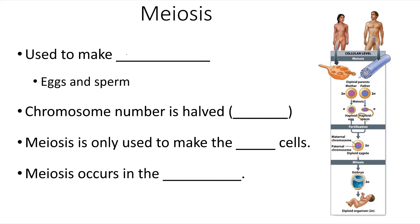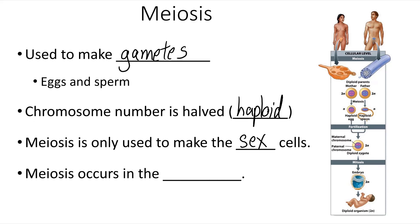Meiosis is specifically used to make gametes or sex cells — sperm and egg. In gametes, the chromosome number is halved. We use the term haploid to show that these cells have only one chromosome of each type, instead of being diploid, meaning having two chromosomes of each type. So most of our body cells are diploid, but the cells that undergo meiosis result in cells that are haploid. Meiosis is only used to make the sex cells — it's not for growth, not for repair, not for tissue regeneration.